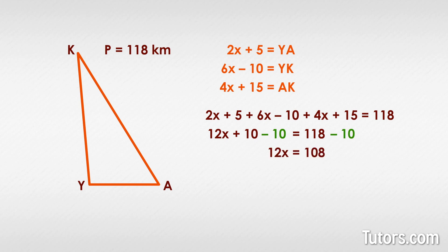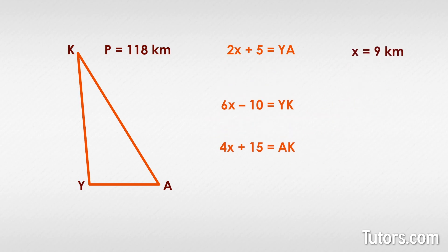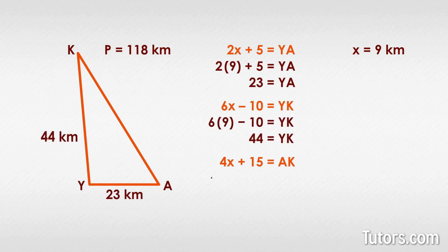Finally, you divide both sides by 12. This gives you X equals 9 kilometers. Now we go back to each expression and replace X with 9 kilometers, and solve each expression until we have the length for each side.